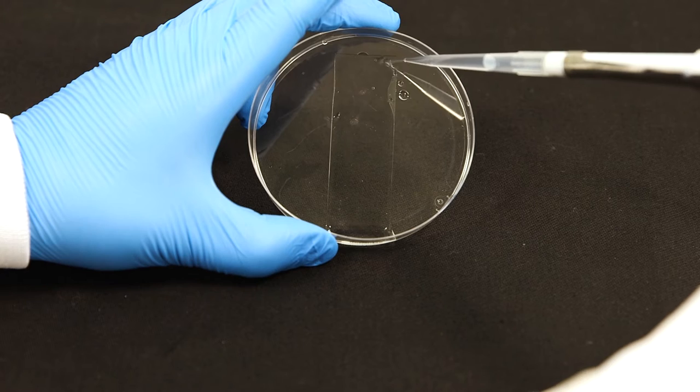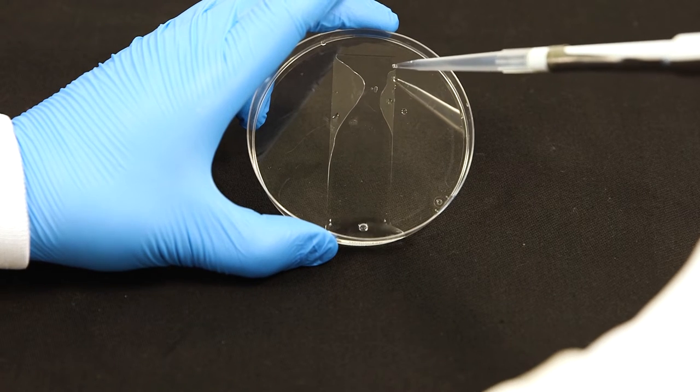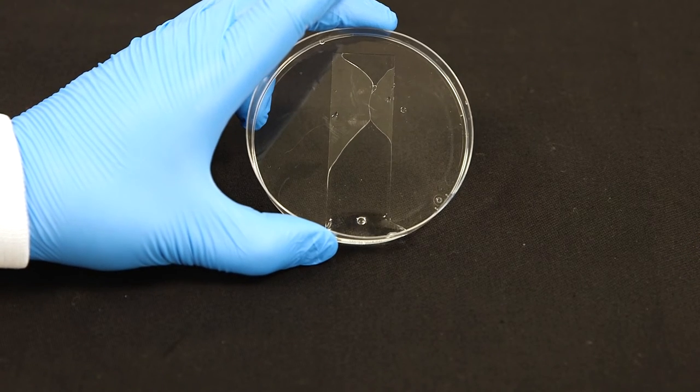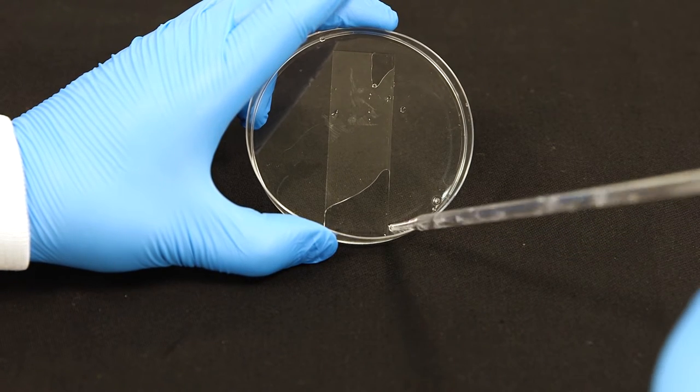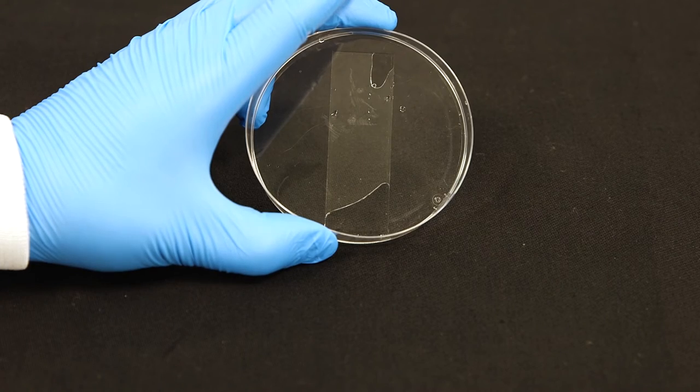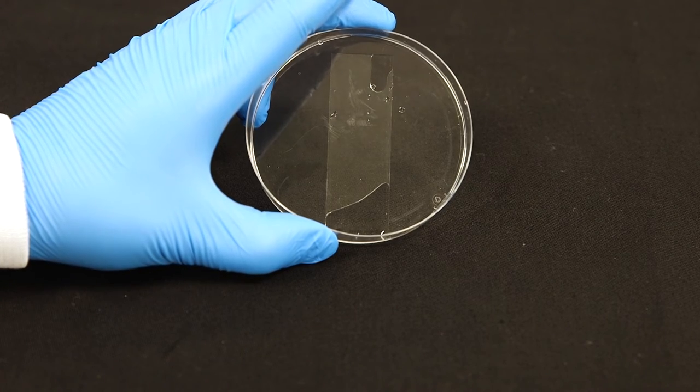Then, wash away any cells that have not settled into wells by tilting the Petri dish and adding 1 milliliter of suspension buffer to one end of the chip. This step can be repeated if unsettled cells remain on the gel surface after inspection under the Brightfield microscope.